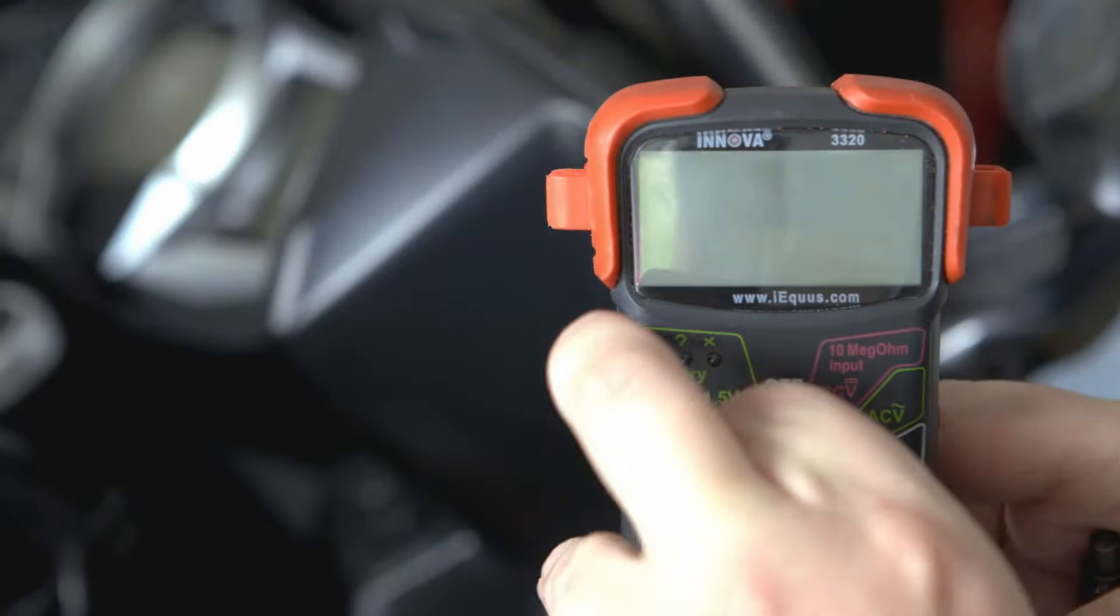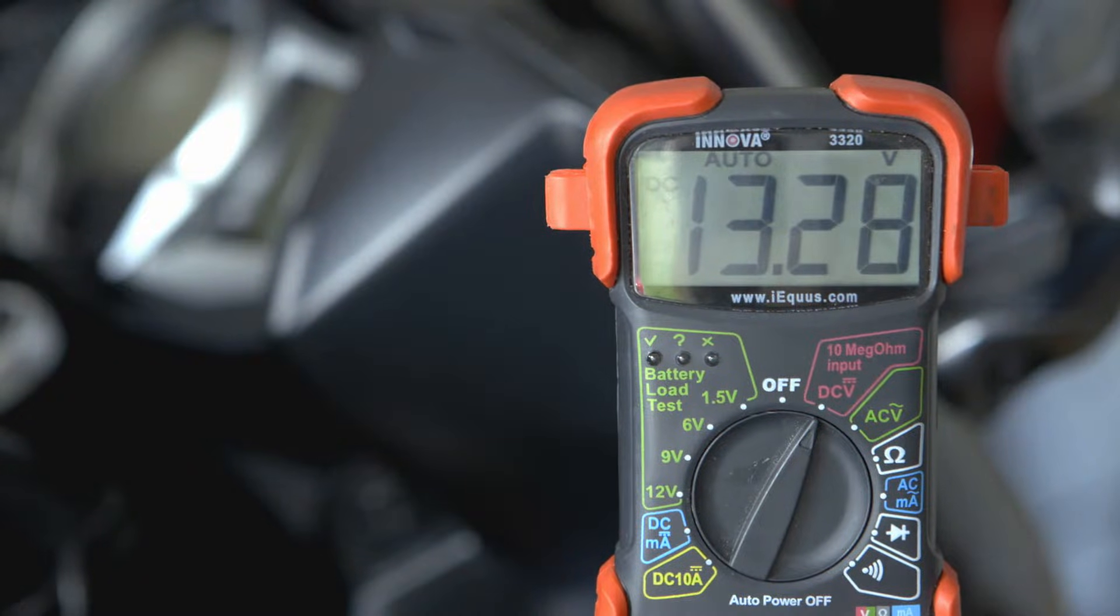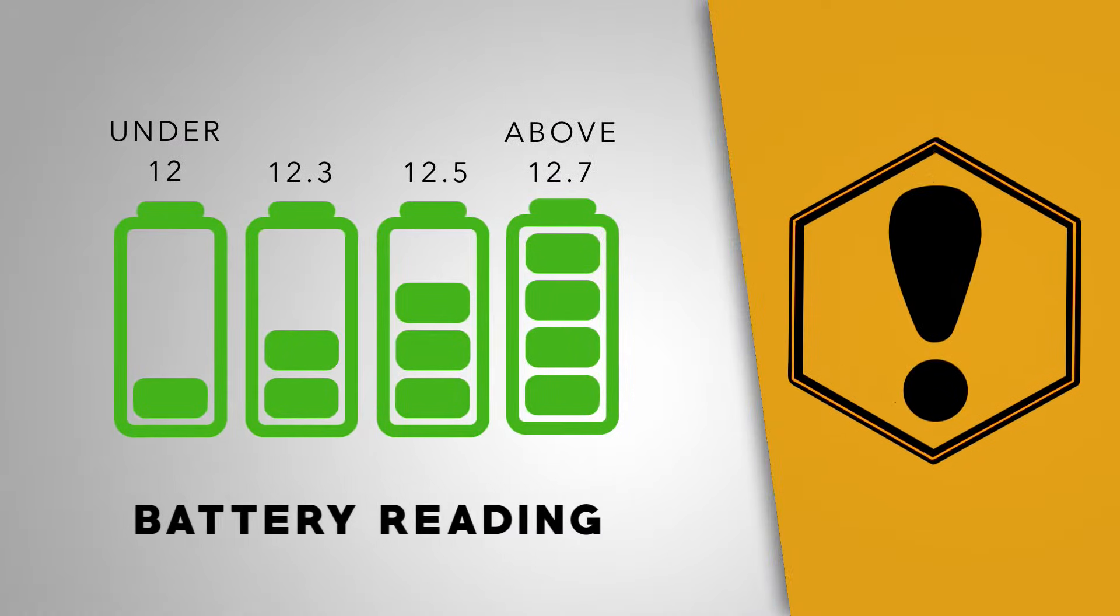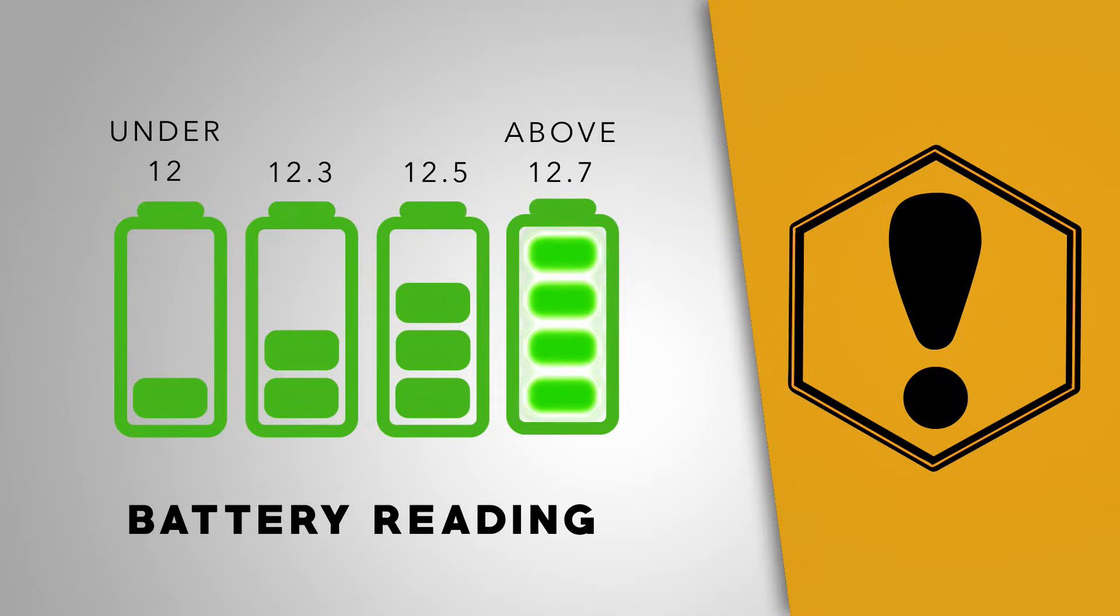Now you'll be able to see the rate of charge. If the battery is fully charged, it should read between 12.7 and 13.2. If it's 12.5, that means it's about 75% charged. If it's 12.3, it's about 50% charged. If it's under 12, it's most likely discharged.